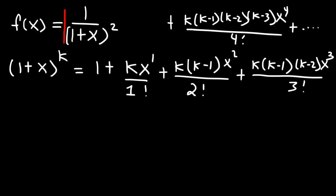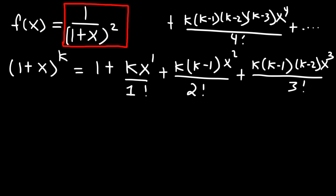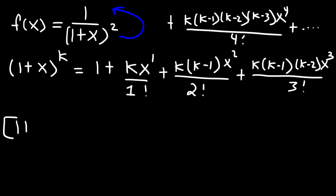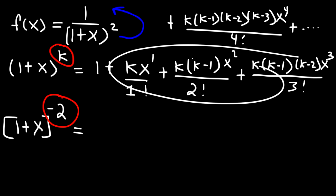What we need to do is represent this function in this form. Let's take the 1 plus x squared term and move it to the top, so we're going to have 1 plus x raised to the negative 2 power. You can clearly see that k is negative 2. Now plug k into this expression.